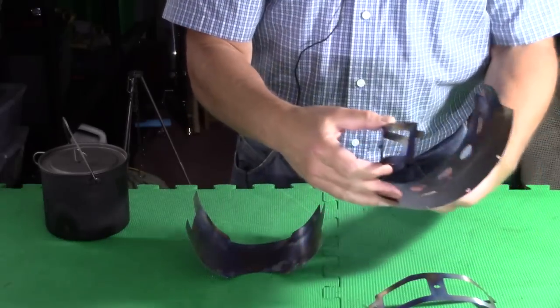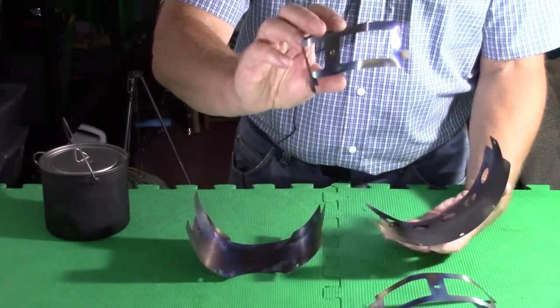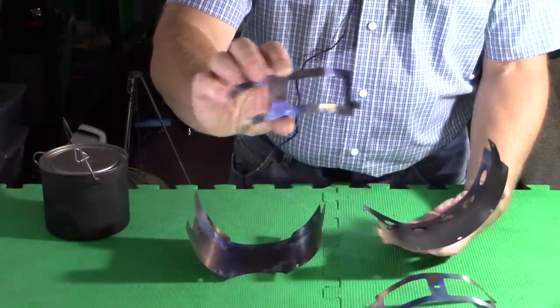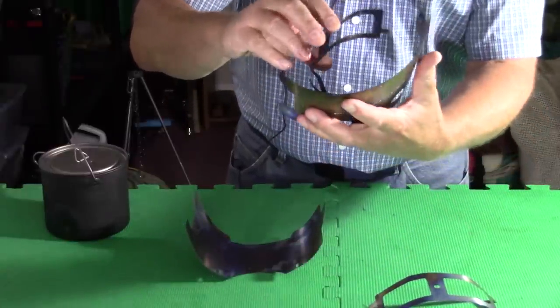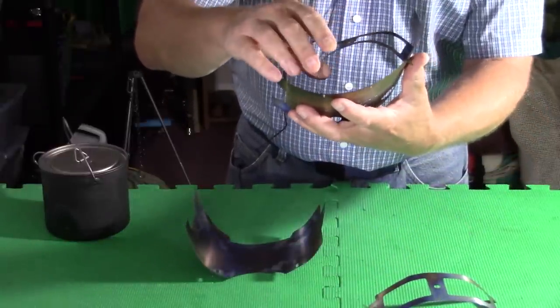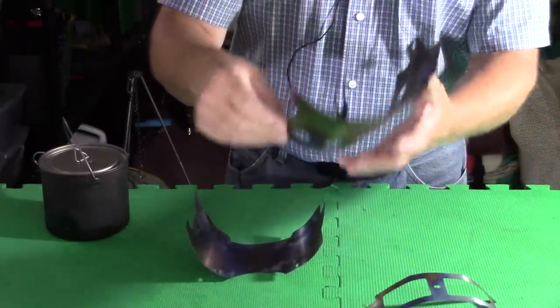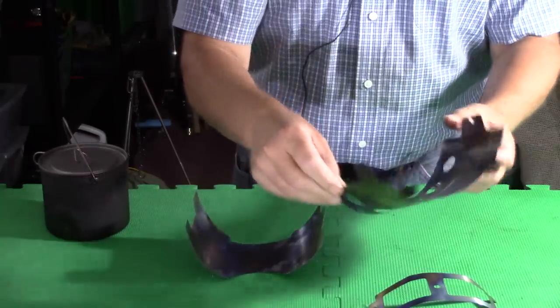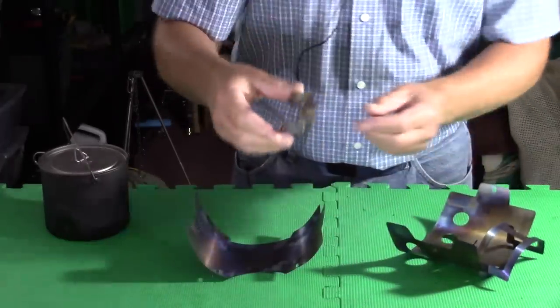I'll set it up the way I did my first time using it. You take each pot stand. They have tabs on either end that match up with notches on each of the panels, and because of the spring nature they hold in place.